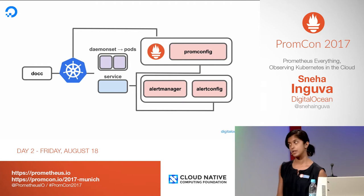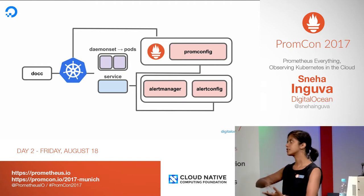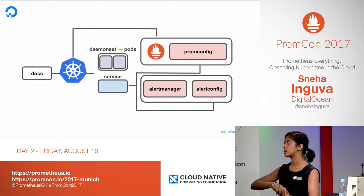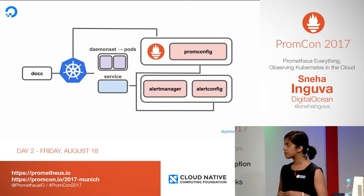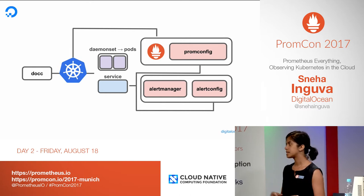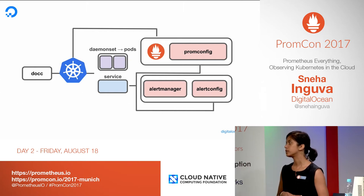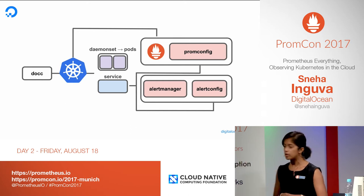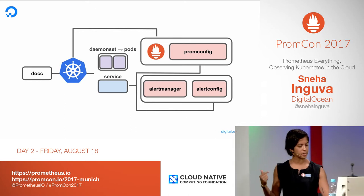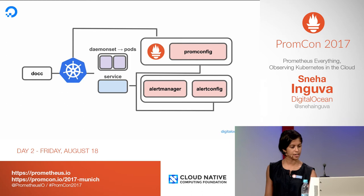This is our current setup. We've deployed Prometheus alongside a small sidecar service known as PromConfig within a pod. We've done the same thing with AlertManager — deployed it alongside something called AlertConfig, also in a pod. The two containers can communicate over localhost.